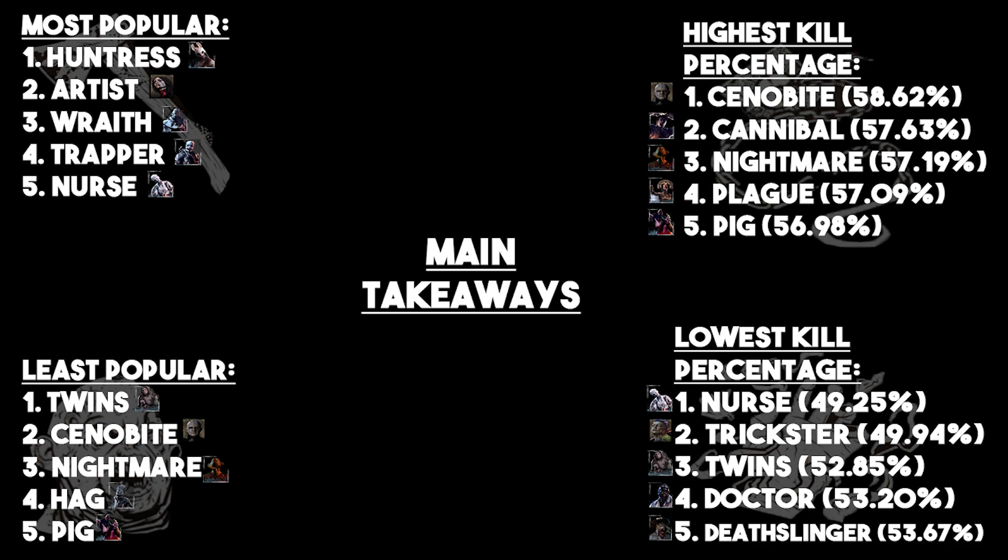I'm very surprised Doctor is in the lowest kill percentage, because you'd expect him to clean up at the ash ranks as a noob stomper. Not only would I have said he was in the highest kill percentage, I would have said top three. I don't know if it's that he's not doing well at high ranks and that's really costing him. Death Slinger I'm not surprised by — the nerfs have definitely hurt his percentage, and he was already a high-skill-ceiling killer to learn despite his power essentially being 'just gun.'